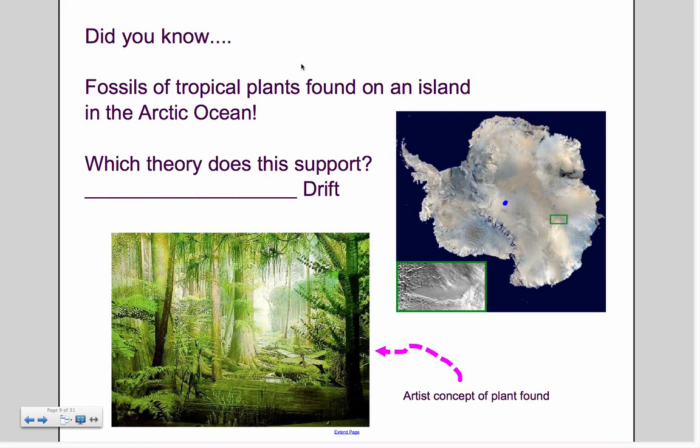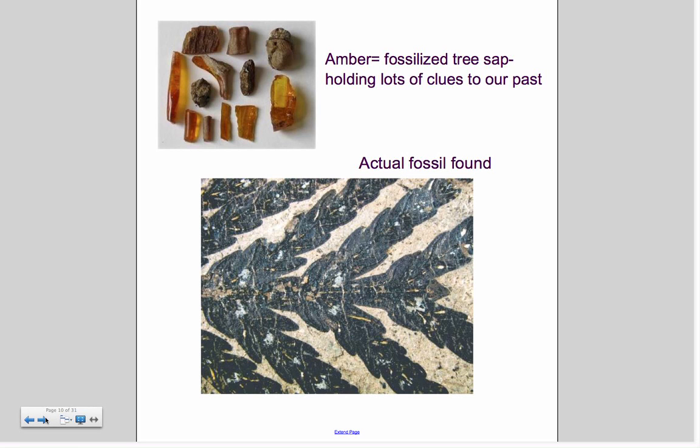Did you know there are tropical plants found on an island in the Arctic Ocean? This evidence supports the theory of continental drift. In the picture to the right, you see that's Antarctica. The little green square here in this box is blown up here. They actually found fern plants, fossilized plants that couldn't have survived there. Two things we're going to look at are amber, which is fossilized tree sap. They can actually hold bugs and insects and leaves in them, so we can actually extract the DNA and look at how things would have been structured.